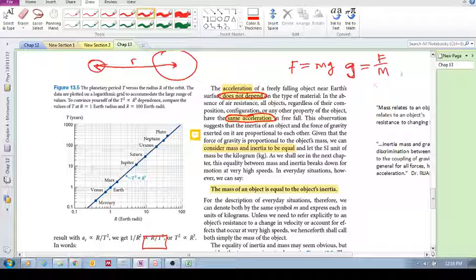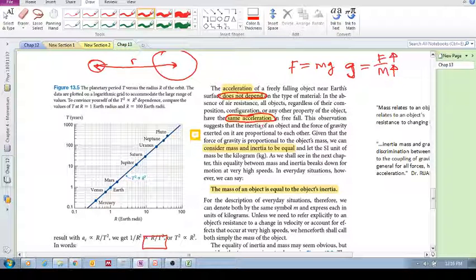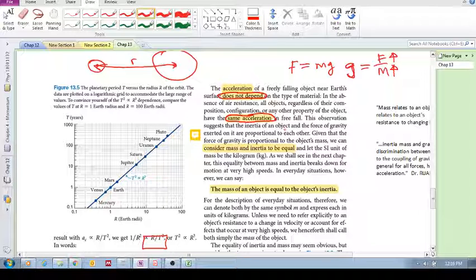So if g is constant and m increases, that means that the force of gravity increases. So these two are proportional. The inertia of an object and the force of gravity are proportional to each other. If m goes up, then the force of gravity goes up proportionally, and this means that g remains constant.